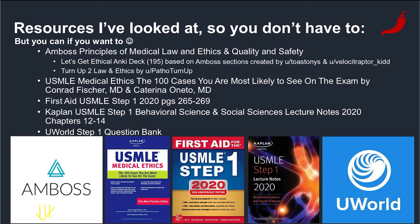So these are the resources I've looked at so you don't have to. The AMBOSS principles of medical law and quality and safety sections provides a pretty neat list stemming from the USMLE content outline. There is one Anki deck called 'Let's Get Ethical' with 195 cards created in 2020. We also have another Anki deck called 'Turn Up to Law and Ethics' with 175 cards, created for those preparing for Step 2 and Level 2. USMLE Medical Ethics: The 100 Cases by Drs. Conrad Fisher and Katerina Oneto has been a tried and true resource. If you still need more practice questions after UWorld and AMBOSS, go straight to the practice question section starting on page 79 — answers and explanations start on page 131.